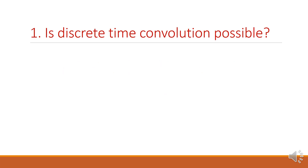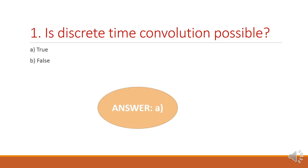First question: yes, discrete time convolution is possible. We have already seen continuous time convolution, that is called as convolution integral. Now we are going to see discrete time convolution. Option A: true, option B: false. The answer is option A, true, because discrete time convolution is called as convolution sum.